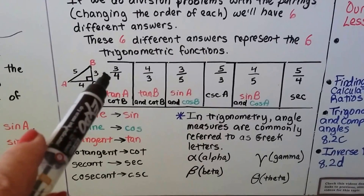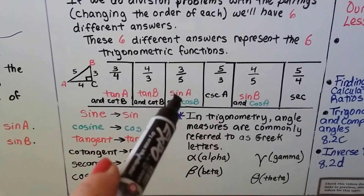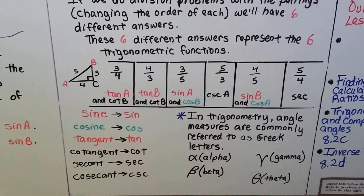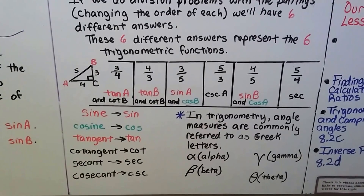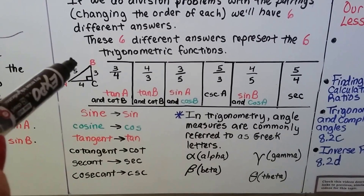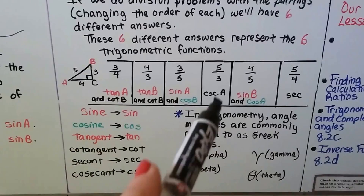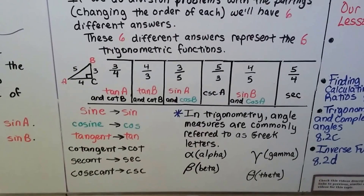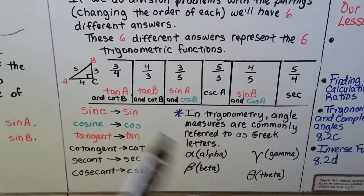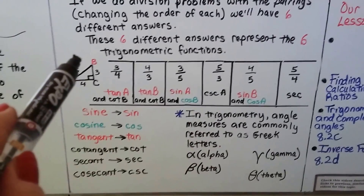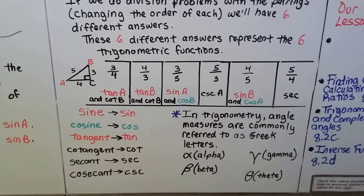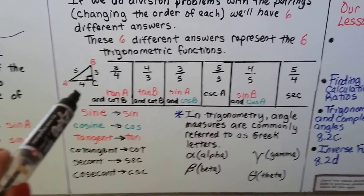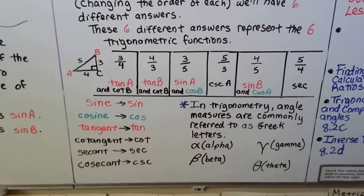If we put leg three over hypotenuse five, that's the sine of A and also the cosine of B. If we put the hypotenuse over leg three, that's the cosecant of A. If we put leg four over the hypotenuse, that's the sine of B and the cosine of A. And if we put the hypotenuse over leg four, that's the secant.